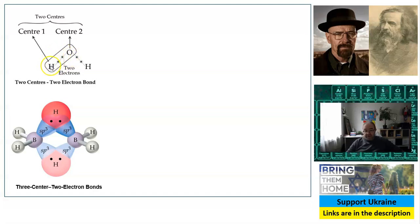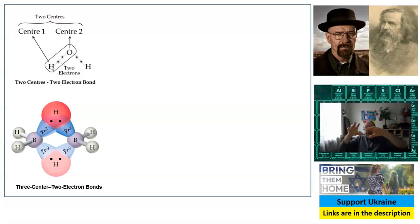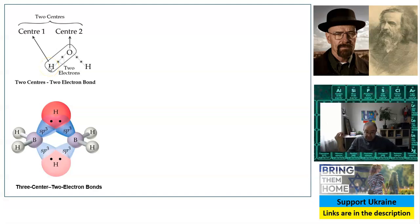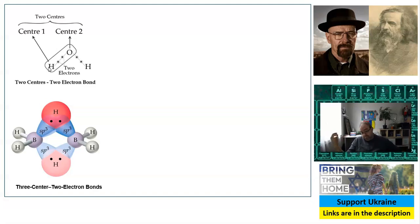In real life those two electrons make a sort of cloud, and this cloud is basically what holds the atoms together. But if electrons make a cloud, then in theory you can make a bond from any number of electrons — and not only in theory but also in practice.